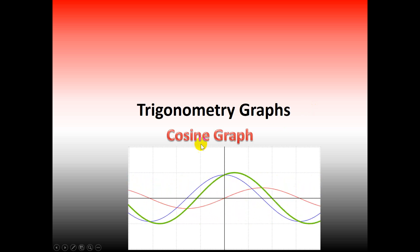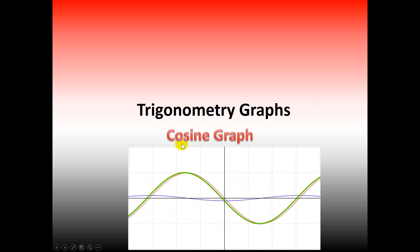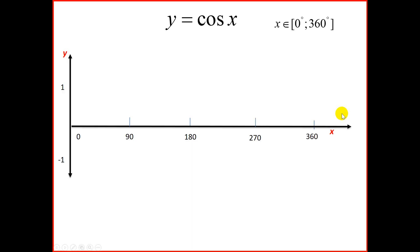In this video we're going to be looking at the cosine graph. We're going to draw the function y equal to cos x in the domain 0 to 360 degrees. Set up the x-y axis and mark off 0, 90, 180, 270, 360, and on your y-axis minus 1 and 1. You can pause the video and when you're ready click on play.